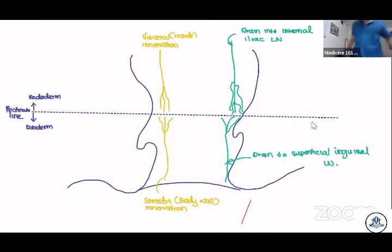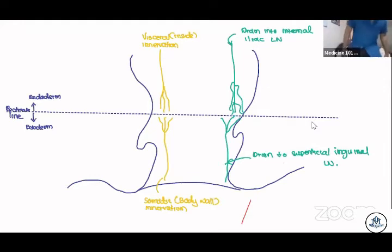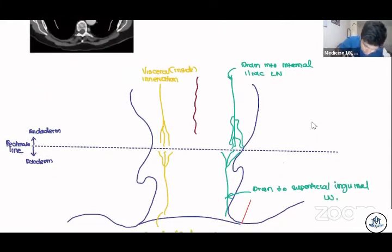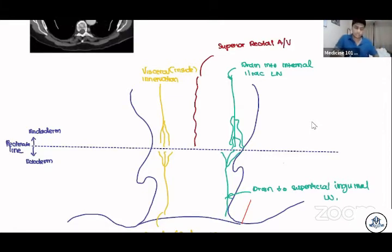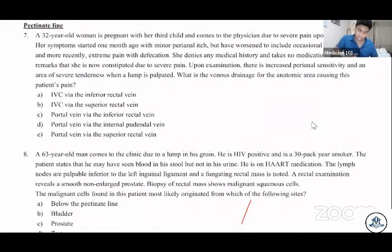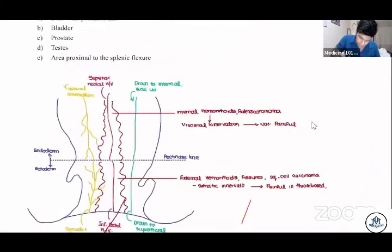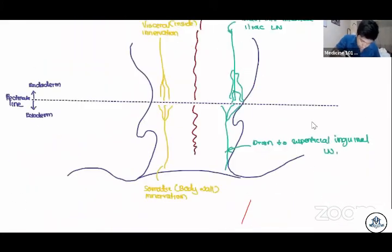Below the pectinate line, they drain into the superficial inguinal lymph nodes, which are located in this region here. Now let's take a look at the blood vessels. Above the pectinate line we have the superior rectal artery and vein.